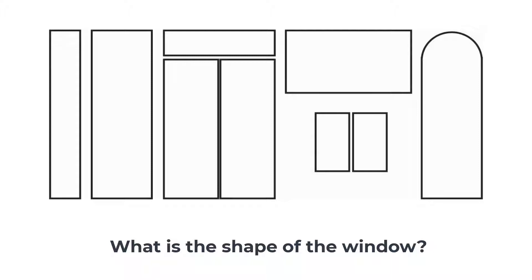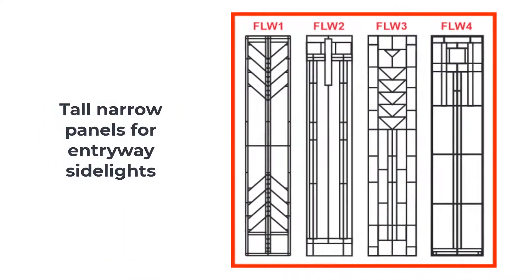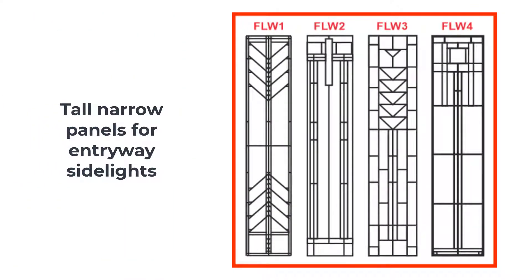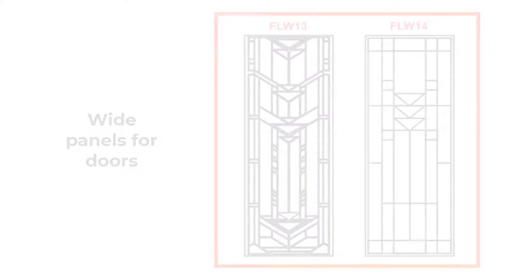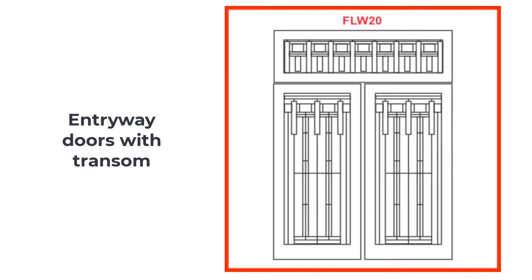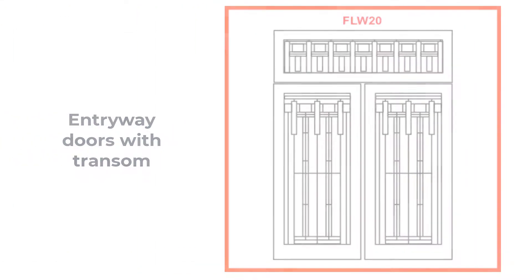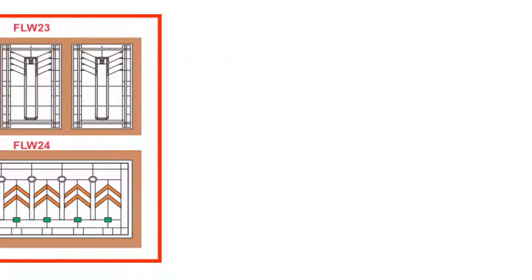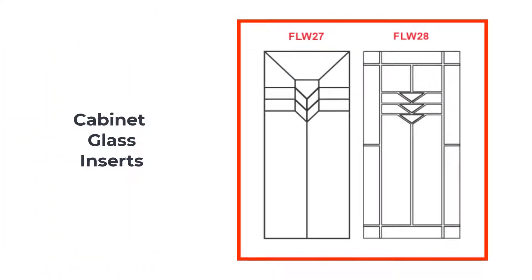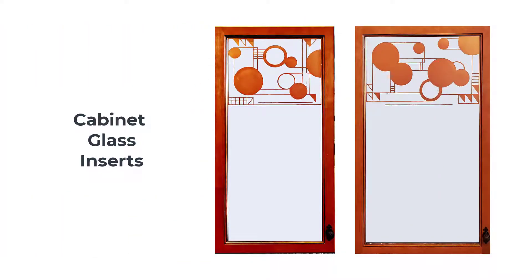A very important question is: what is the shape of your window? Do you have tall, skinny panels like these that can be used for front door side lights? Or do you have a wide panel in a door, or even entryway doors with a transom over the top? Frank Lloyd Wright designs can be repeated to make very attractive elongated panels suitable for clerestory windows, and they can also be simplified to make very stylish small panels for cabinet doors.